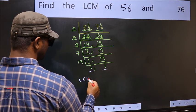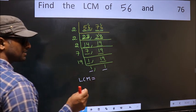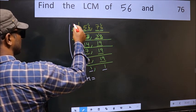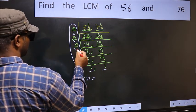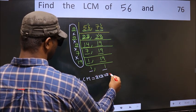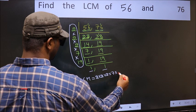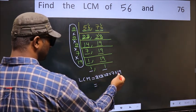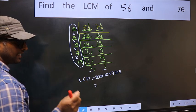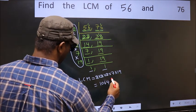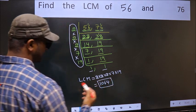So our LCM is the product of these numbers. That is 2 into 2 into 2 into 2 into 7 into 19. When we multiply these numbers, we get 1064 is our LCM.